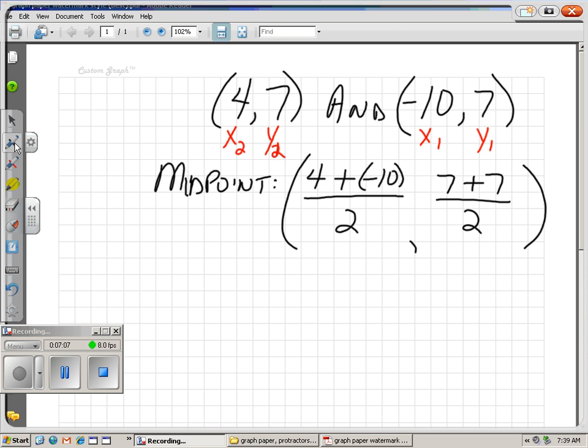Now add your y's because they're your y coordinates. And divide by 2. And then just do the arithmetic. All the algebra is done. We just have arithmetic to do. 4 plus -10. That gives you -6, which we're going to divide by 2. 7 plus 7 is 14, which we're going to divide by 2. And our final midpoint is (-3, 7). That's halfway in between (4, 7) and (-10, 7).